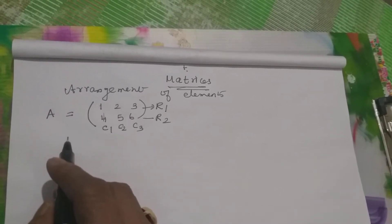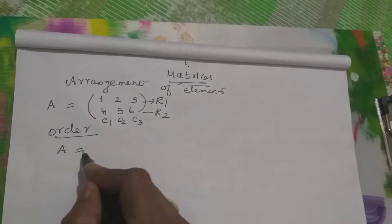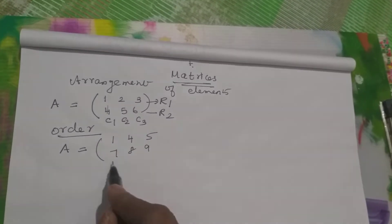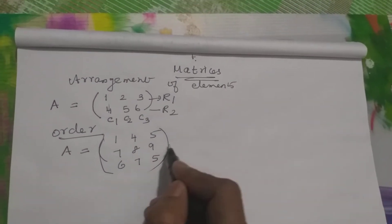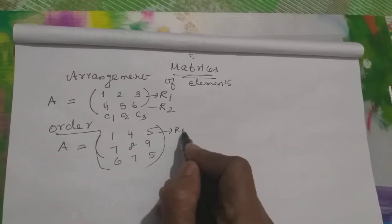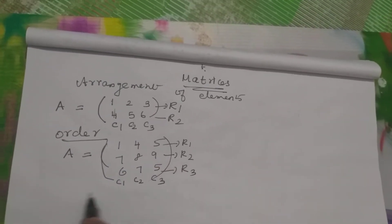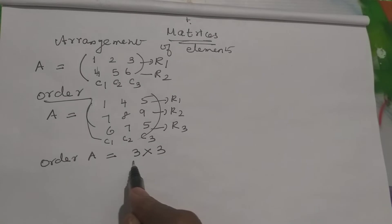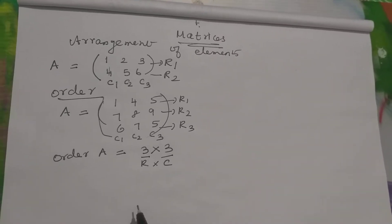Now we are going to find out the order of the matrix. If you take any matrix and write it as: 7, 8, 9, 6, 7, 5 — how many rows here? 1, 2, 3 — so row 1, row 2, row 3. Column 1, column 2, column 3. So the order of matrix A is 3 by 3. We do not call it 3 into 3, we call it 3 by 3, where the first 3 is rows and the second is columns. That is row by column — this is the order of the matrix.